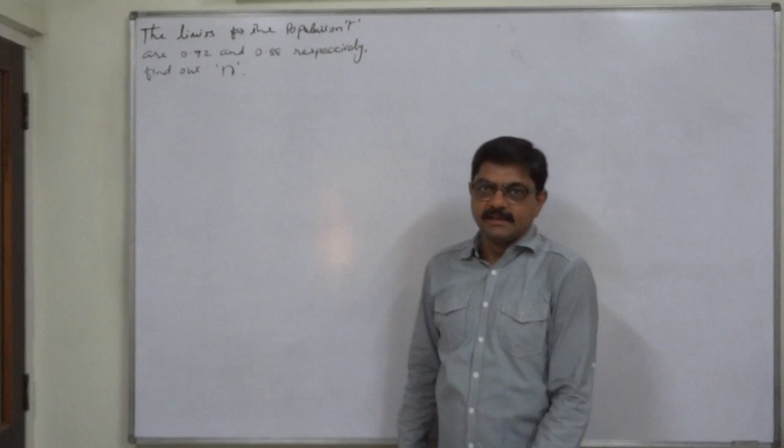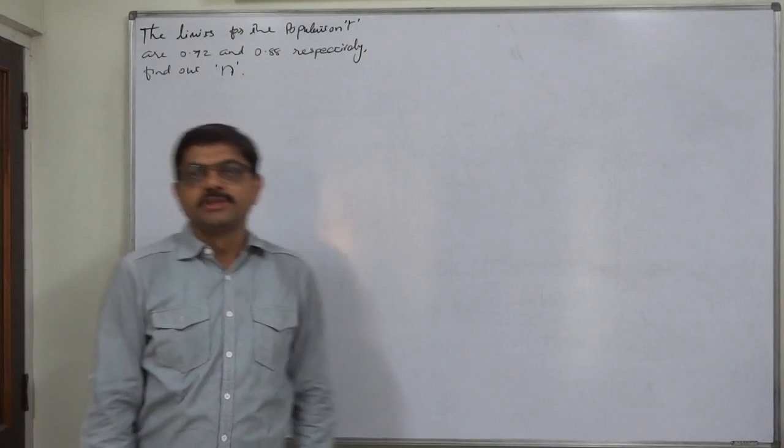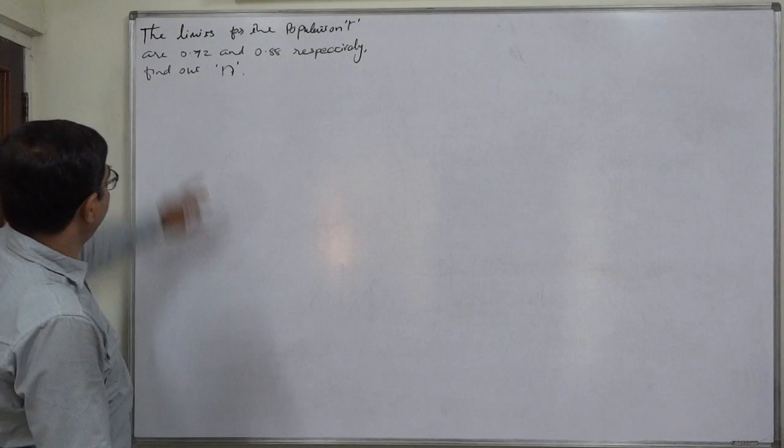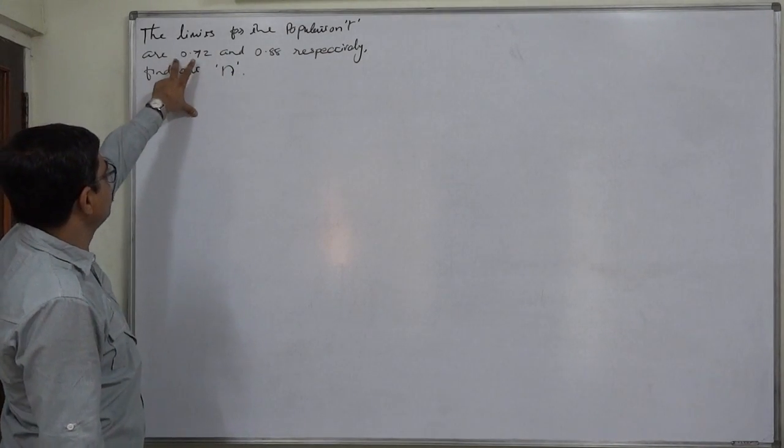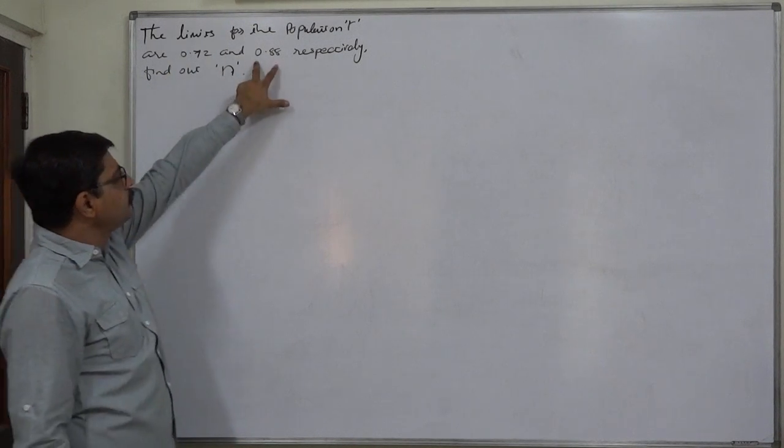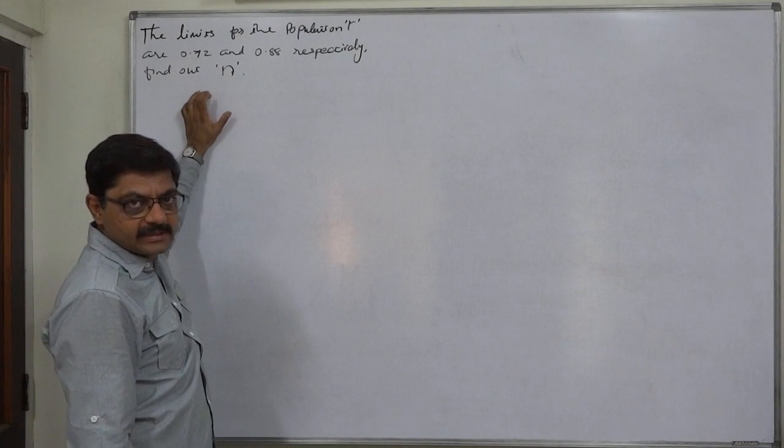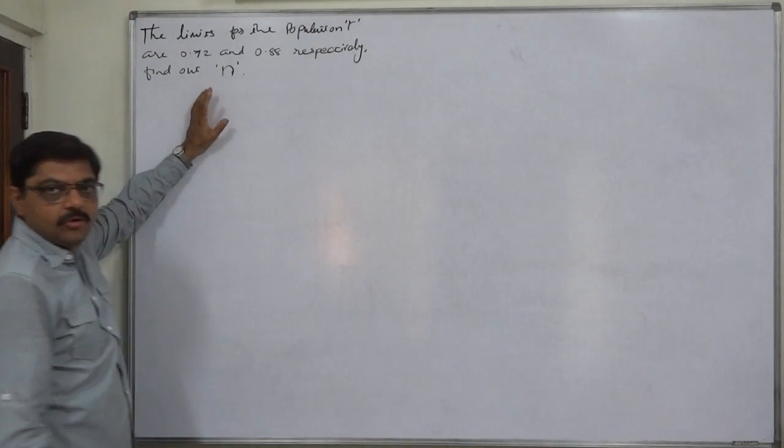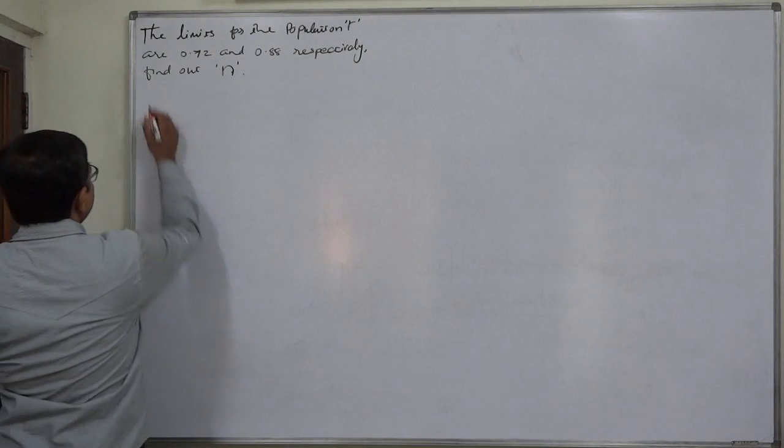Hello and welcome friends, we are with another case and this case involves reverse calculations. The information available is the limits for the population correlation coefficient are 0.72 and 0.88 respectively. Find out N or sample size. As we know, the lower value shows the lower limit and the higher value shows the upper limit, so the lower limit is 0.72 and the upper limit is 0.88.